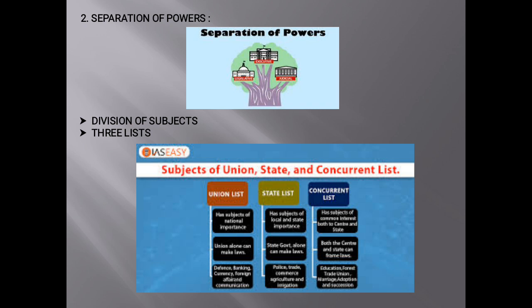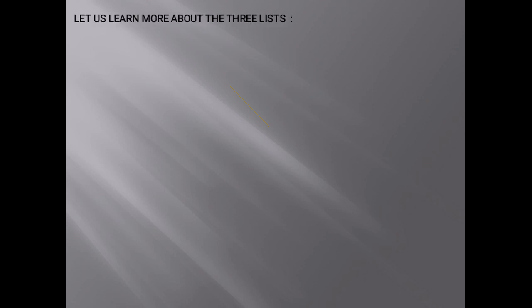Let's study about the separation of powers. The constitution has divided the subjects for making laws between the union government and the state governments. Our constitution has given three lists of various subjects. The first one is the union list, which contains 97 subjects on which the union government makes laws.